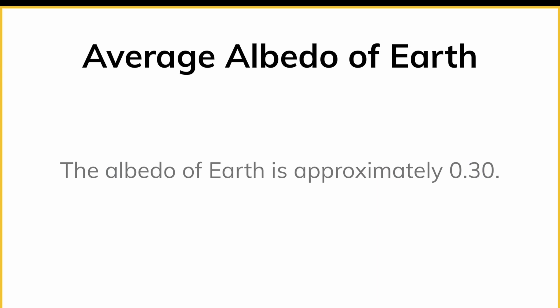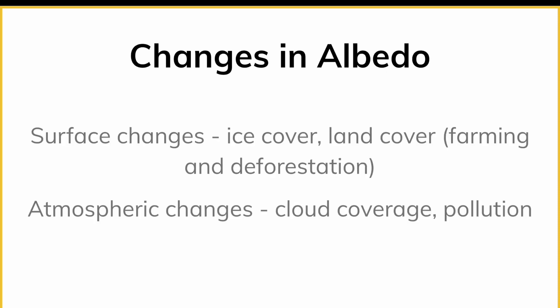On average, we say the albedo of Earth is approximately 0.3, meaning 30% of incoming solar radiation is reflected back into space. There are a bunch of different things that change the albedo — ice cover and land cover change the surface, and things in the atmosphere like clouds also matter, since more clouds reflect more of the light.